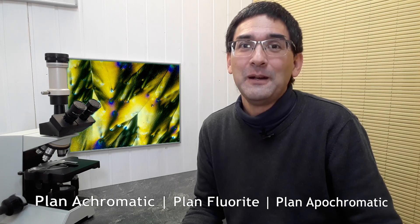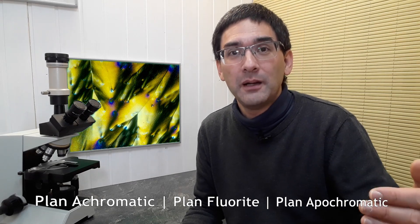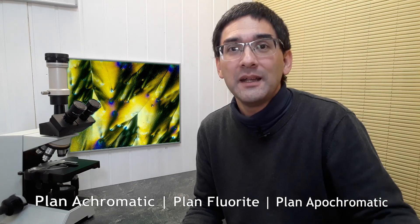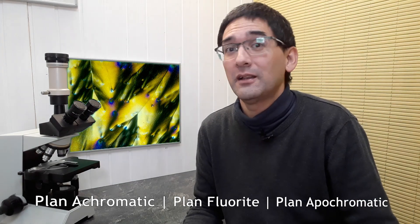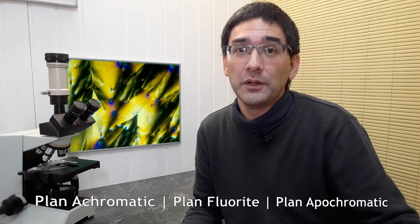So that is basically the correction of chromatic and spherical aberration. But now if you want to have a flat field, if you also want to correct for the field curvature, then you have to get those versions that are also plan objectives. So you can get, for example, achromatic objectives and plan achromatic objectives. You can get fluoride objectives and also plan fluoride objectives, and so on.